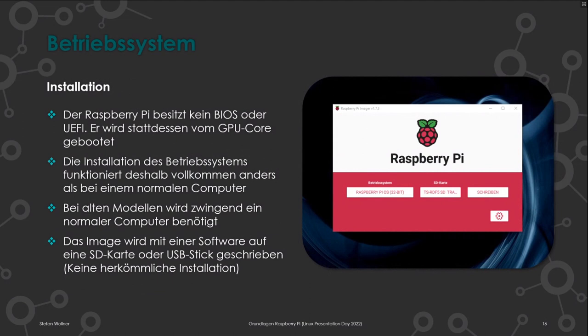Die Installation funktioniert etwas anders als beim normalen Computer. Dafür gibt es den Raspberry Pi Imager, den wir uns gleich ansehen. Bei älteren Modellen braucht man zwingend einen anderen Computer – deswegen dieses Windows-System. Den Raspberry Pi Imager gibt es für Windows, macOS und Linux. Bei aktuellen Modellen wie dem Pi 4 gibt es sogar die Möglichkeit, ihn direkt ins LAN zu stecken und über einen vorgeladenen Imager eine SD-Karte zu installieren.